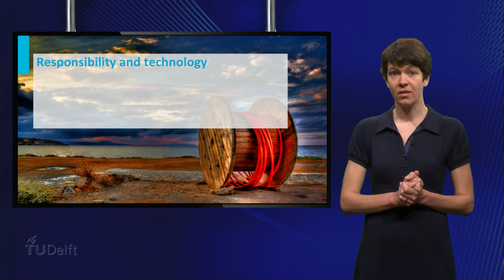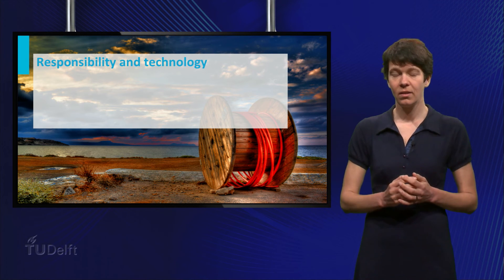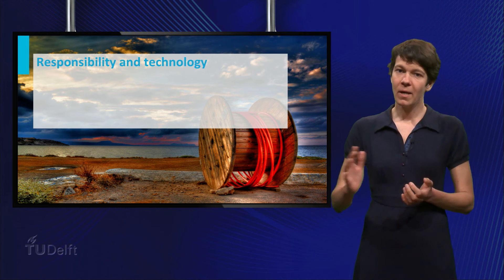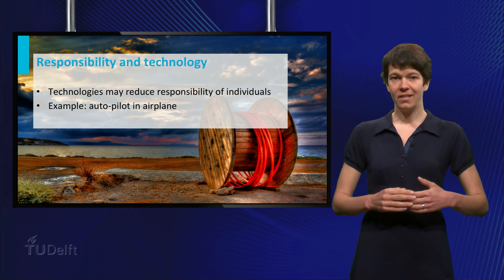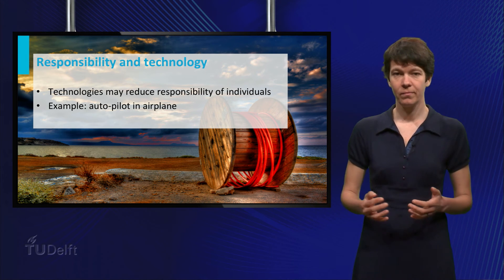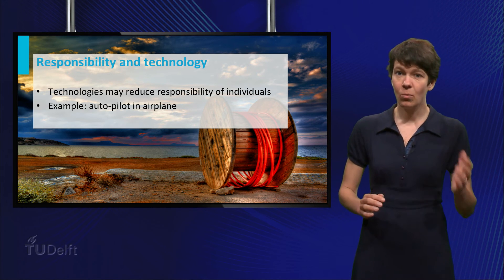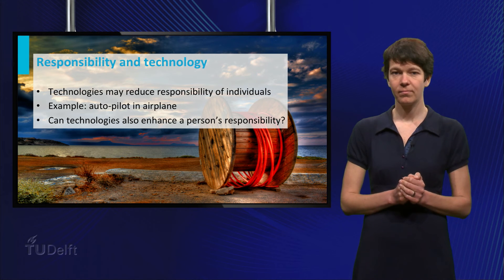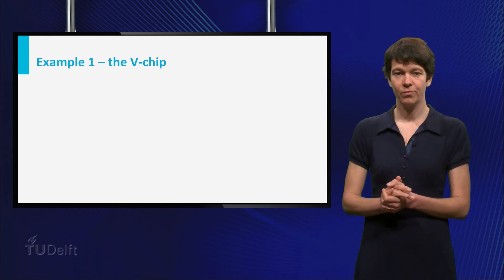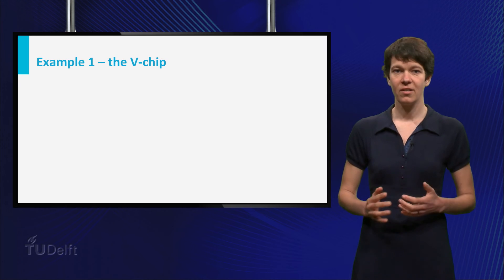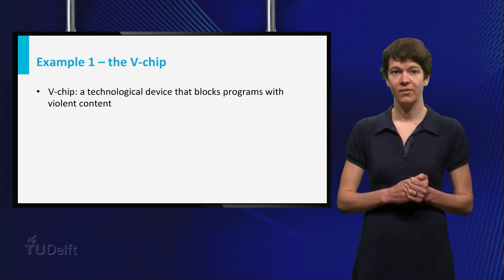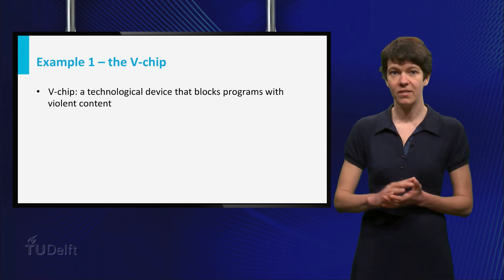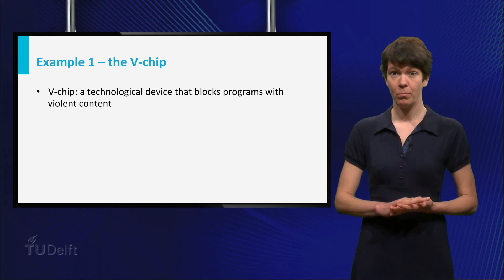This brings us to the last topic of this lecture: the relation between responsibility and technology. The automatic pilot in an airplane is a clear example of a technology taking over responsibility from a person. But can technology also be developed in such a way that it enables people to assume their responsibility? I think that technology can indeed have this role, but it requires that we pay attention to the specific aspects of responsibility when technology is being developed. I will briefly describe two examples. The first is the V-chip — a technological device designed to prevent children from watching violent television content. TV stations broadcast the rating as part of the program, and parents program the V-chip by setting a threshold level rating, and all programs above the rating are blocked by the V-chip when it is turned on.